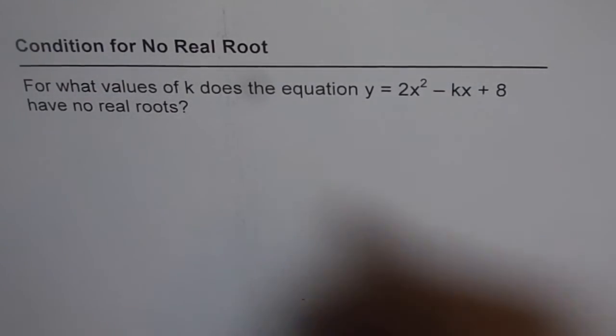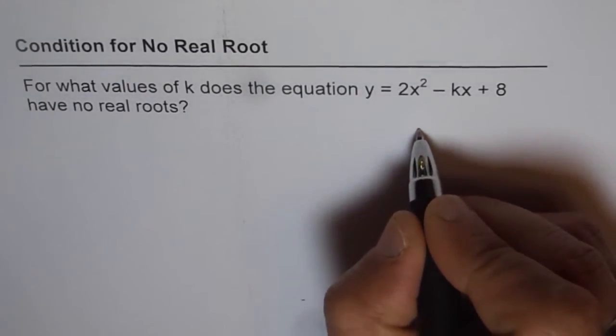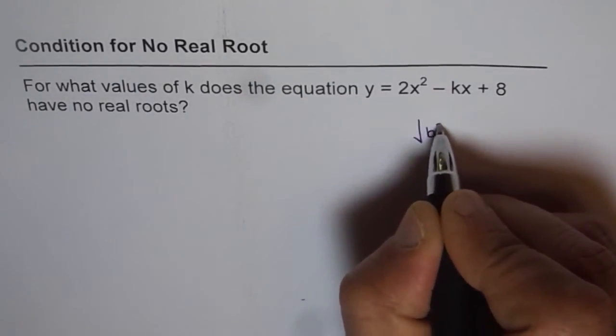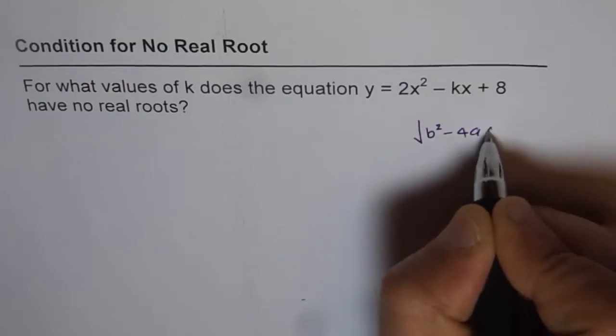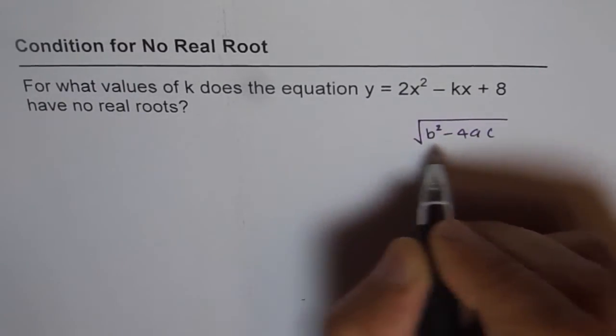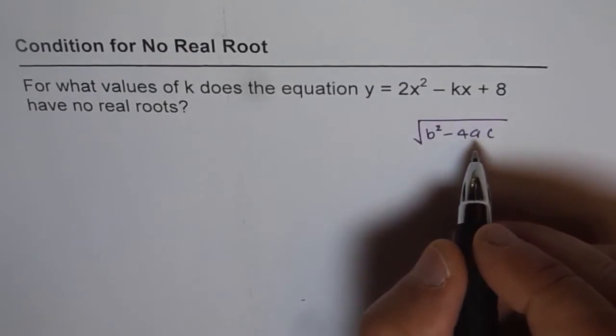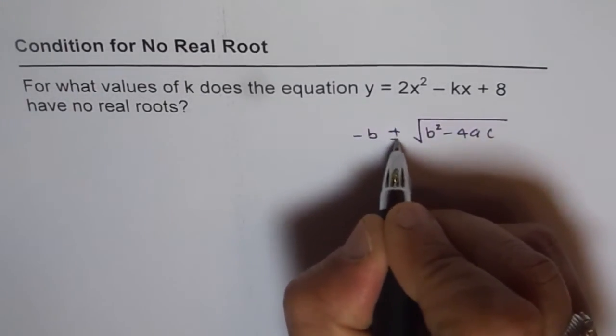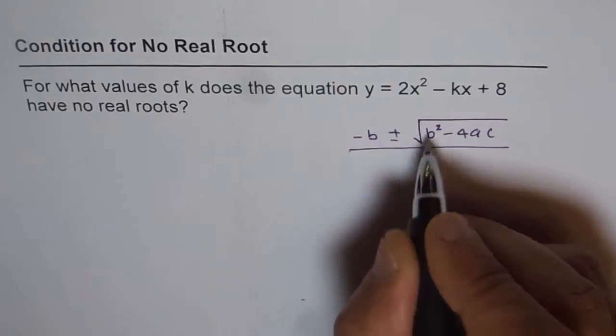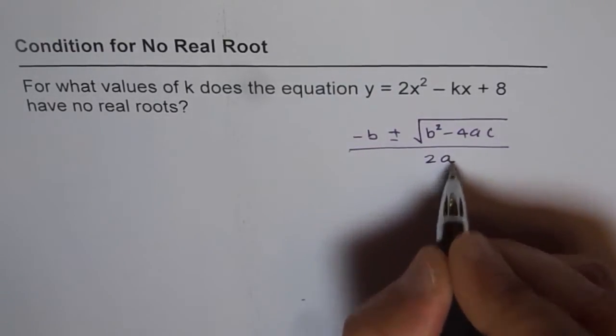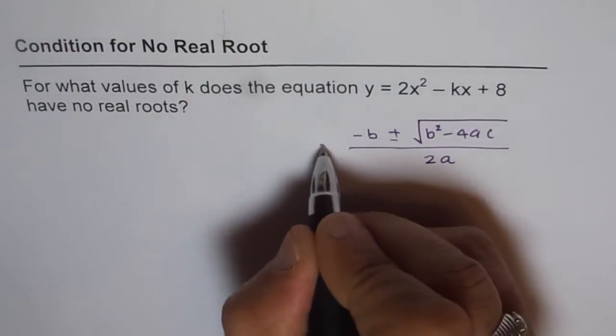Now, as you remember, no real roots means that the discriminant b² - 4ac, which normally is in that square root. Let me write down the whole formula first, which is x = (-b ± √(b² - 4ac)) / 2a, and that is the value of x.